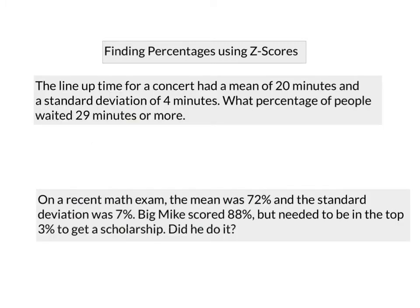So the question here says, the line-up for a concert had a mean time of 20 minutes and a standard deviation of 4. What percentage of people waited 29 minutes or more? So the formula we're going to work with is Z equals X minus the mean divided by standard deviation. So we're going to work out the Z-score for this 29 minutes. So 29 minus the mean, which was 20, divided by 4. So we get 9 divided by 4, which is 2.25.